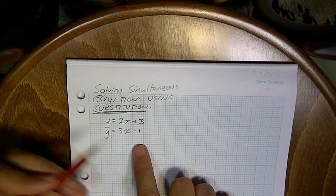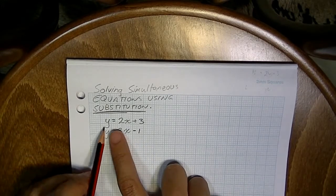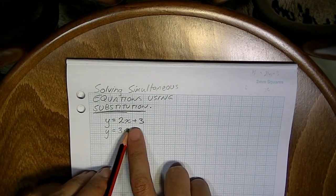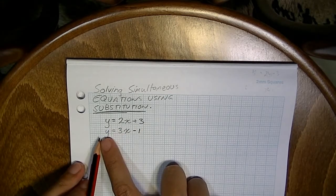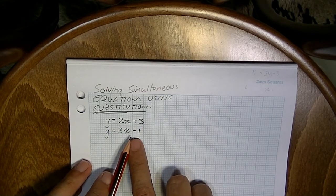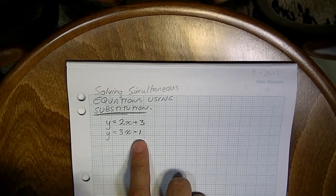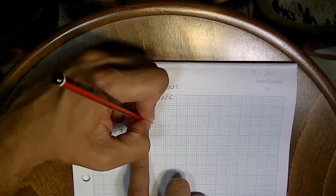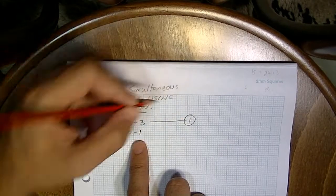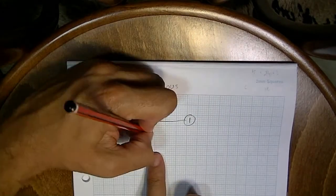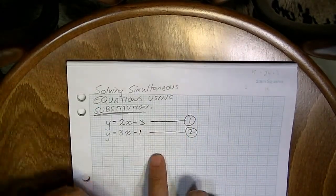Now just a little bit of notation before we start. We've got two equations, y equals 2x plus 3, and our second equation, y equals 3x minus 1. Now it's a good idea to keep things organized. Actually, you've got to do this. Name each of your equations. So I'm going to call this equation number 1, and I'm going to call this equation number 2.